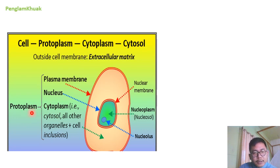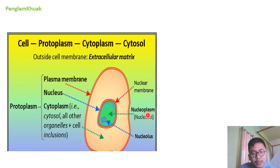So protoplasm means everything including the nucleus. Inside the nucleus, we have the nucleolus where ribosomes are synthesized, and the fluid substance present inside the nucleus is called nucleoplasm or karyoplasm. The membrane which surrounds the nucleus is called the nuclear membrane.